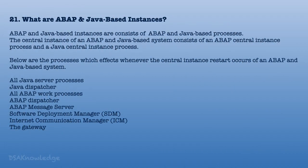What are ABAP and Java-based instances? ABAP and Java-based instances consist of ABAP and Java-based processes. The central instance of an ABAP and Java-based system consists of an ABAP central instance process and a Java central instance process. Processes affected when the central instance restarts include: all Java server processes, Java dispatcher, all ABAP work processes, ABAP dispatcher, ABAP message server, Software Deployment Manager (SDM), Internet Communication Manager (ICM), and the gateway.